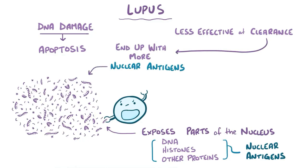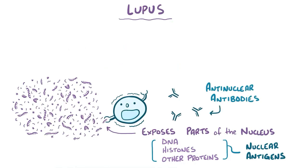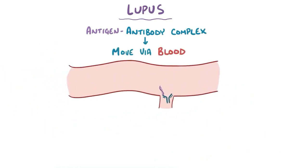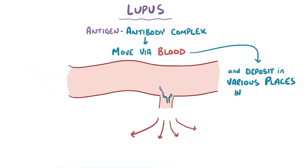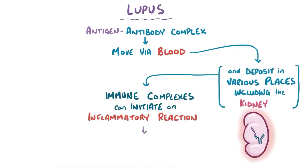As a result of all this, B cells start producing antibodies against these pieces of nucleus, which are called anti-nuclear antibodies. These anti-nuclear antibodies bind to nuclear antigens, forming antigen-antibody complexes, which drift away in the blood and deposit in various places, including the kidneys. These immune complexes can then initiate an inflammatory reaction, known as a type 3 hypersensitivity reaction.